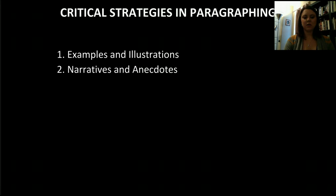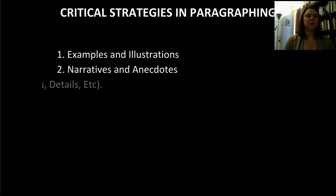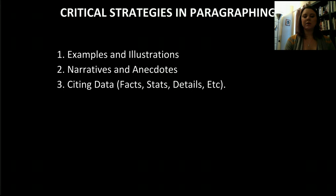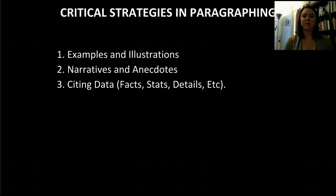Number two is narratives and anecdotes. A narrative is the development of a story over a period of time, while an anecdote is a story within a short frame or moment in time. Number three is citing data — facts, statistics, details, etc. Many of you are starting to pull in research from other readings, which absolutely helps build your writing. Make sure anything you cite is tied back to the topic sentence — how is it helping to prove that topic sentence?